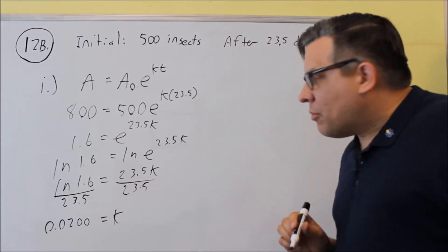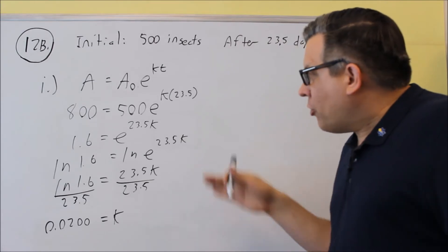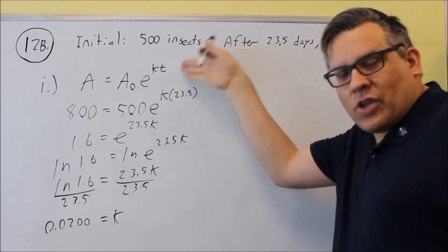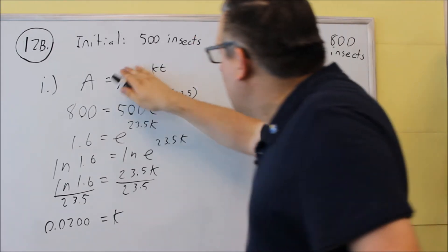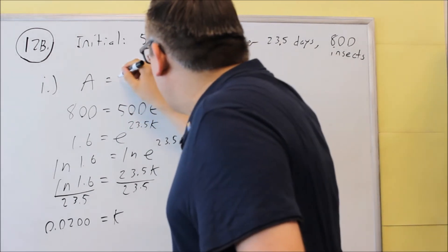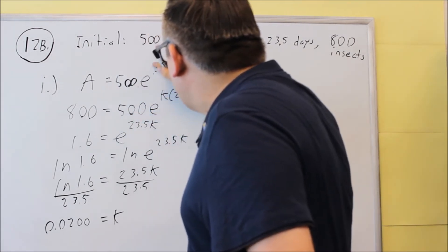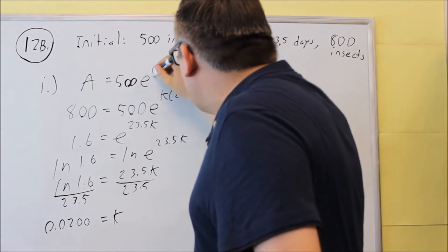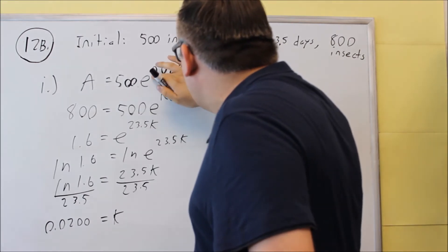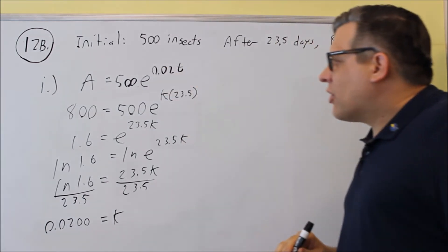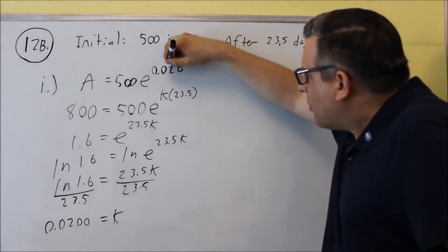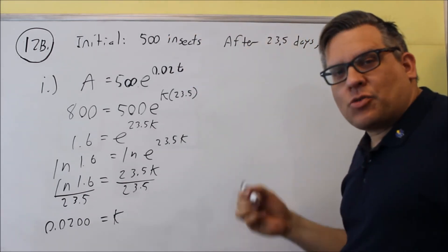And so now, when we come back and put our formula, we're going to put this back into the main growth formula. We're just going to come back and we're going to put a 500 in here, and then we're going to use 0.02T, and that's going to be the specific growth formula for this. So we just get a 0.02 as a result there.